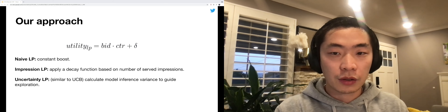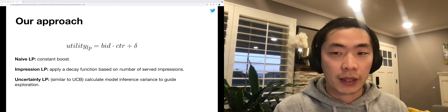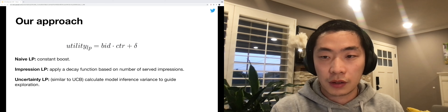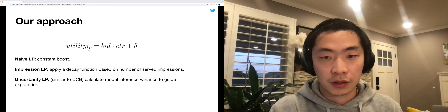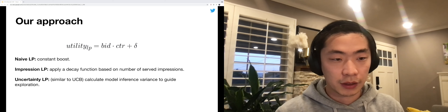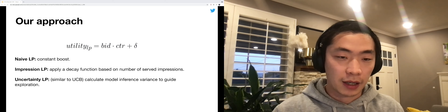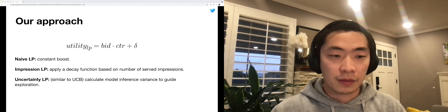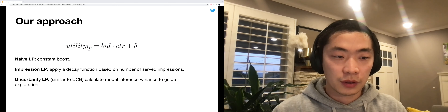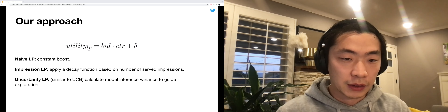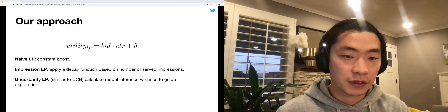To tackle these challenges, we directly apply the exploration on the utility function. As shown here, a delta is added to the utility. There are several approaches to design this delta: we can make it a constant value, or alternatively, we can design a decay function based on the number of sub-impressions.